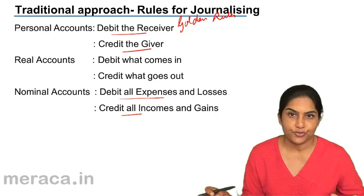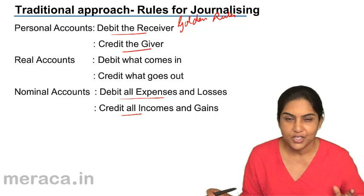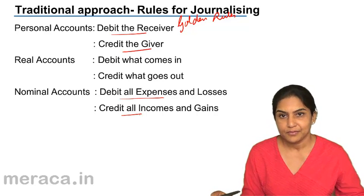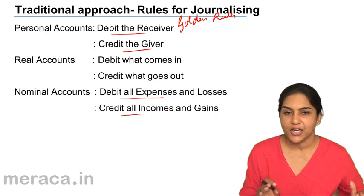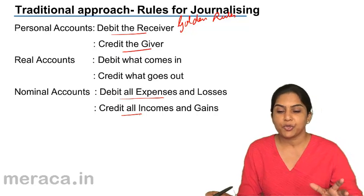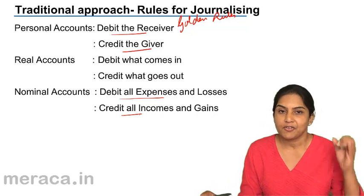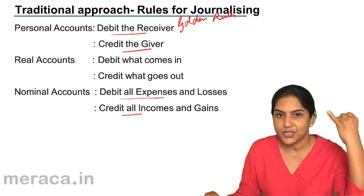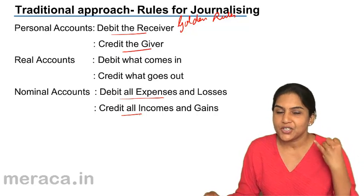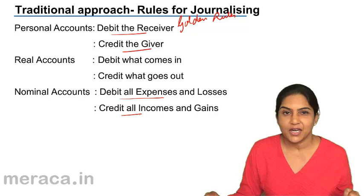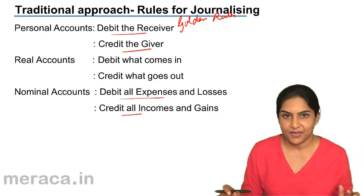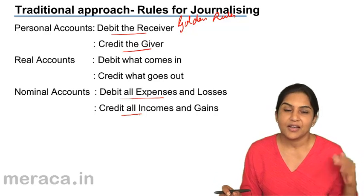So what are the golden rules of journalizing? We need to remember these golden rules because they form the basis for passing journal entries. We could either follow the accounting equation approach or the traditional approach. In the traditional approach, we have three kinds of accounts: personal accounts, real accounts, and nominal accounts. For personal accounts: debit the receiver, credit the giver.